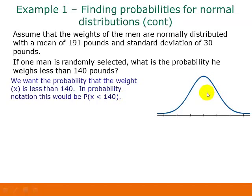Again, we're going to draw the picture of our distribution. And when you do this, it's a really good idea to label the mean and then at least one standard deviation below and above the mean, just so you get a general idea of what the distribution looks like. So 191 was our mean, and if we go one standard deviation below and one standard deviation above that, we've got 161 and 221.